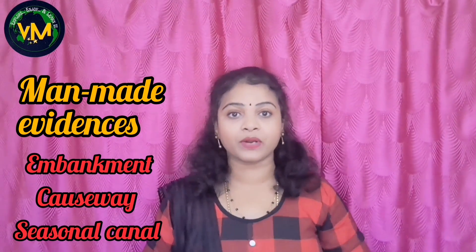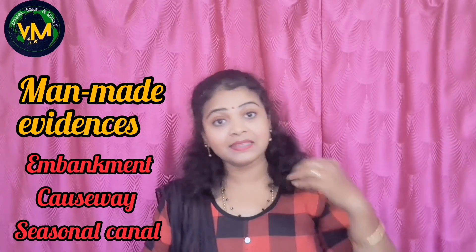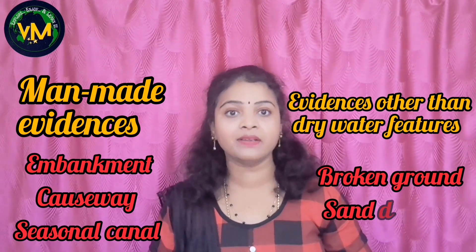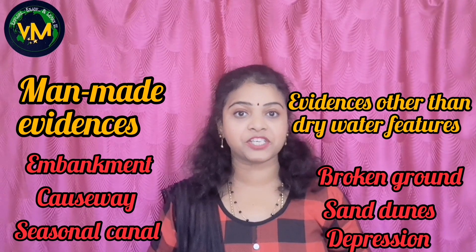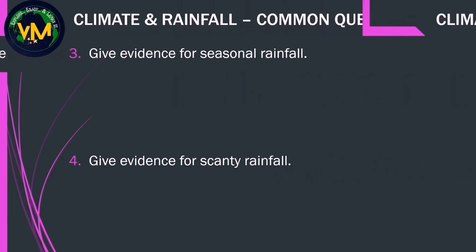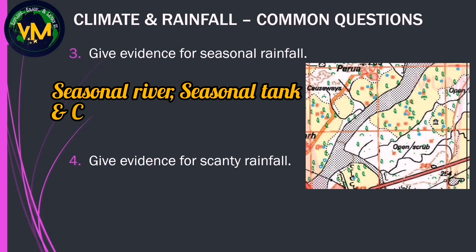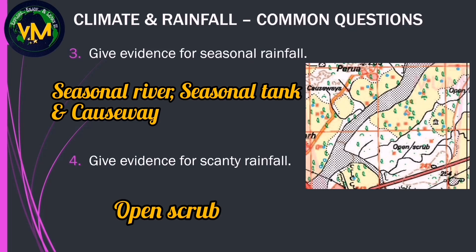Write whichever is present in your map. When asked 'other than dry water features, give two evidences,' you can go for broken ground, sand dunes, or depressions. Can you give evidence for seasonal rainfall in this map? Yes, we can see seasonal river, seasonal tank and causeway. Can you give reason for scanty rainfall in this map? Yes, we have open scrub.